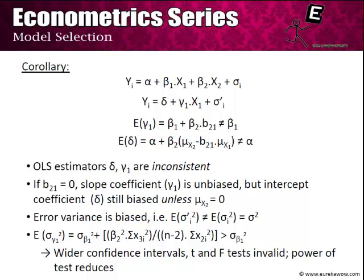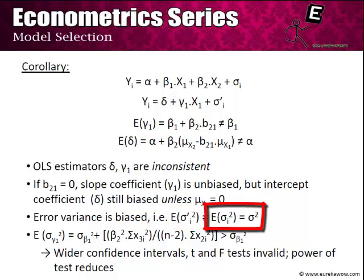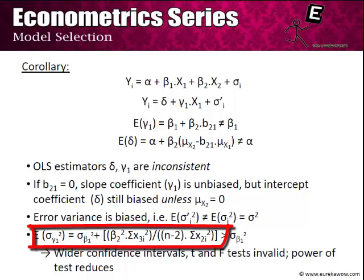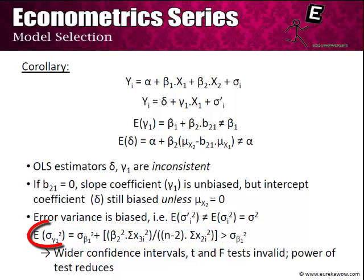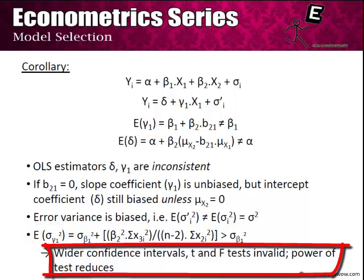Also note that the variance of the error term in the underfitted model, sigma_i'^2, is not equal to the error variance of the original population model sigma^2 — hence the error estimate is also biased. Furthermore, the variance of the slope coefficient sigma_gamma1^2 equals sigma_beta1^2 plus a term which is positive in all cases, meaning the variance in the underfitted model is greater than in the true population model. This leads to a flatter normal distribution, wider confidence intervals, and invalid t and F tests with reduced power for hypothesis testing.